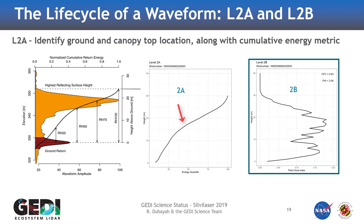And then 2B looks at the canopy profile metrics, so the LAI as a function of height, or the planar index as a function of height, as well as total LAI and the canopy height, which many of us would be interested in from the forestry perspective.